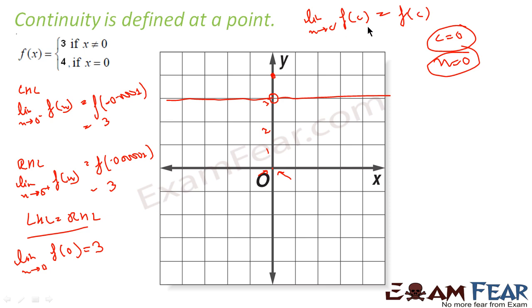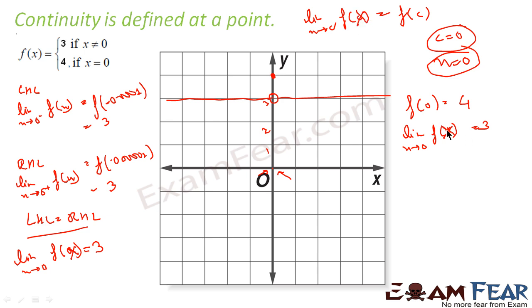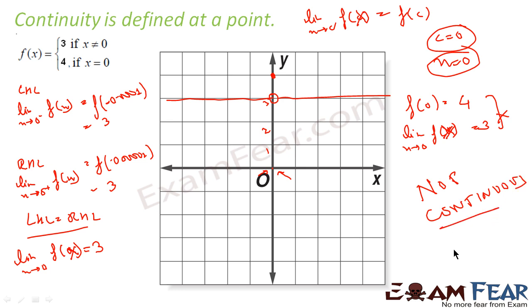The second step is to check whether this limit value equals f(0). Let's find f(0): f(0) = 4. So the limit as x tends to 0 of f(x) is 3, but f(0) is 4. They are not equal. Since they are not equal, I can say the function is not continuous at x = 0. Here, 0 is the point of discontinuity. In this case the limit existed but its value was not equal to f(c).